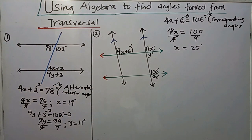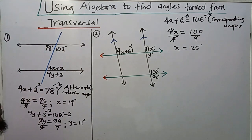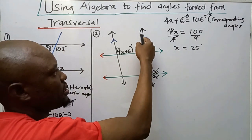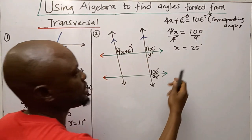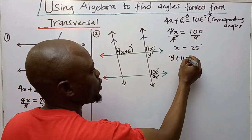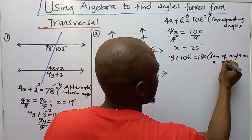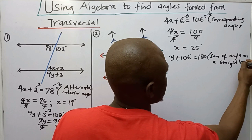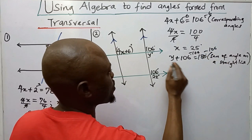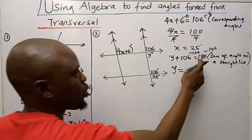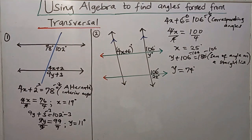Now I want to get Y. To get Y, this angle is on a straight line with the 106-degree angle. The sum of angles on a straight line is 180 degrees, so Y equals 180 minus 106, which gives me 74 degrees.